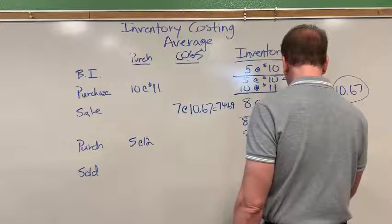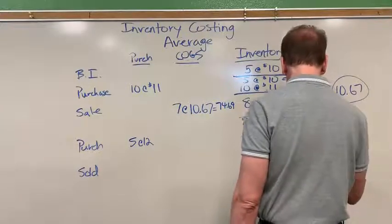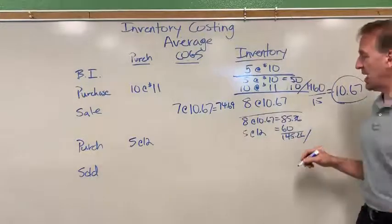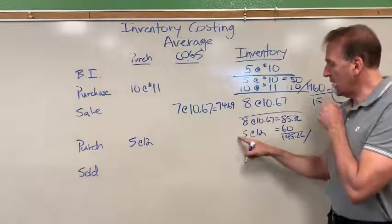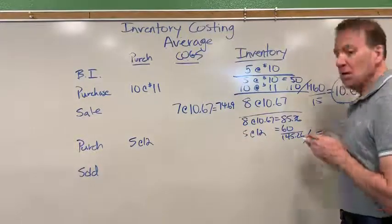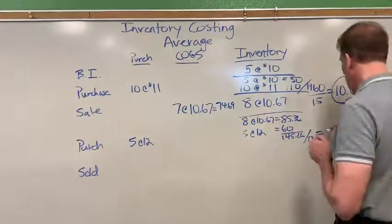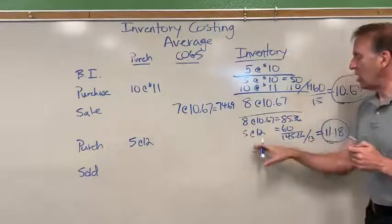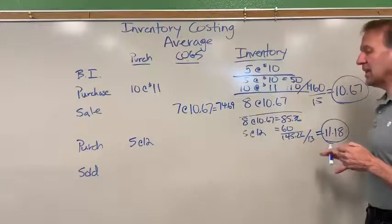So my total is one forty-five twenty-six. To get my average, I need to divide it by the number of soccer balls in inventory, which is thirteen. So when I do that, I'll get an average of eleven eighteen. So now all thirteen are in inventory at eleven dollars and eighteen cents.